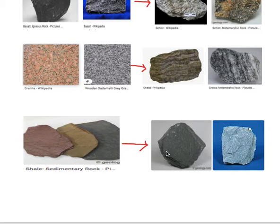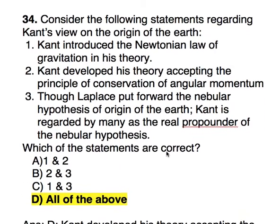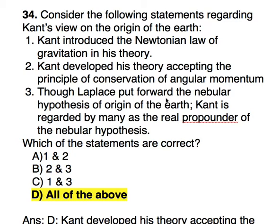This question requires us to rectify the answer. Consider the following statements regarding Kant's view on the origin of the earth. There are three options. The first: Kant introduced the Newtonian law of gravitation in his theory — is this correct or wrong?